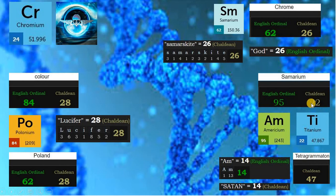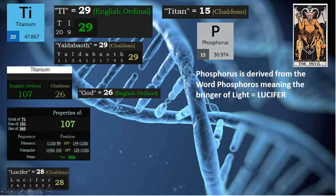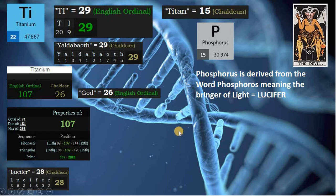Samarium is 22 in Chaldean, matching element titanium. The atomic mass of titanium is 47, like the Tetragrammaton. Ti is 29 like Yaldabaoth. Titanium is 107 in English ordinal, and 107 is the 28th prime number. 28 is Lucifer. Titanium is 26 in Chaldean, like God.